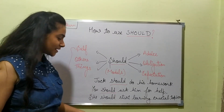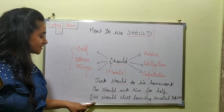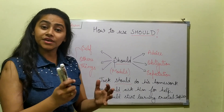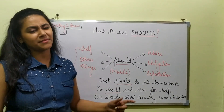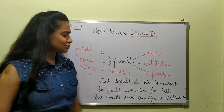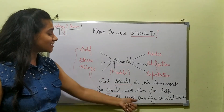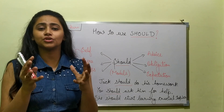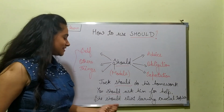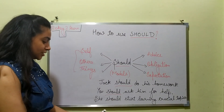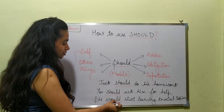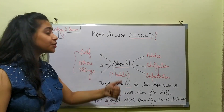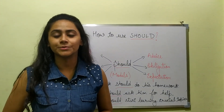Moving on to practice a little more: 'She should start learning crucial topics.' Here I am exactly putting my expectation from her — that she should start learning some crucial, some important, some essential topics. That's why I said, 'She should start learning crucial topics.' And that is how we practice using the modal 'should.'